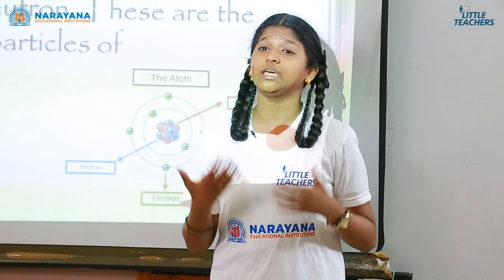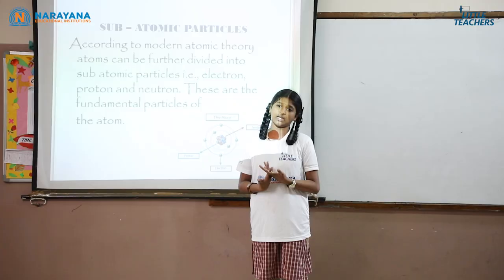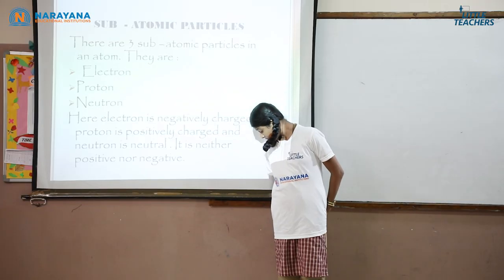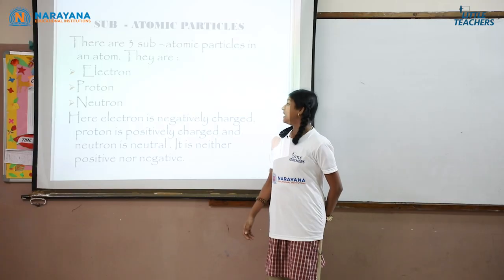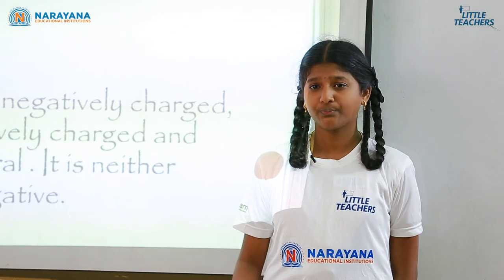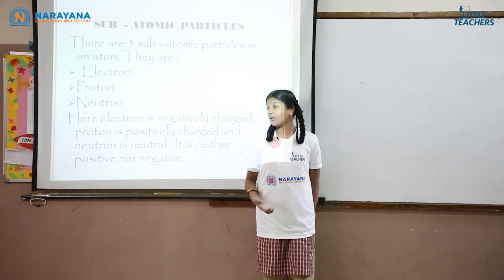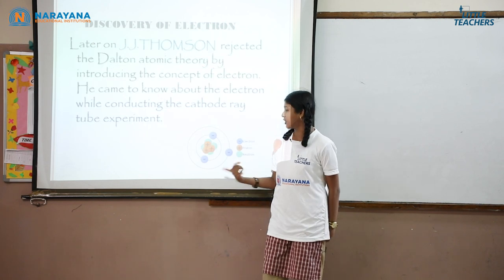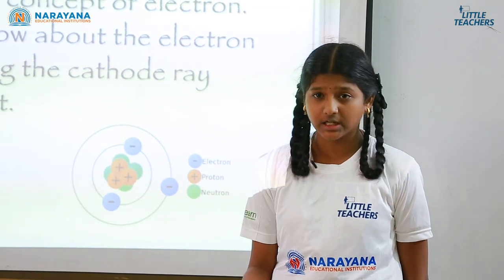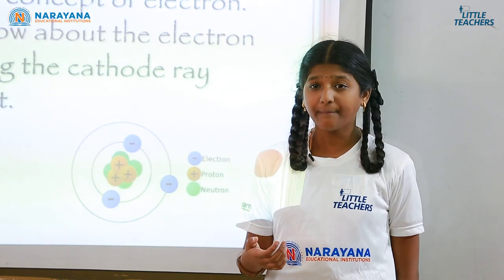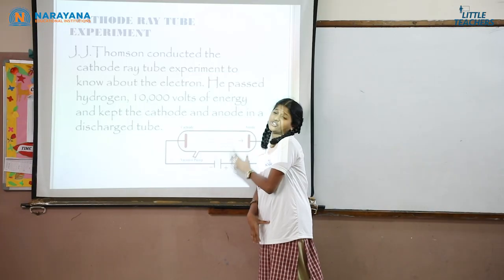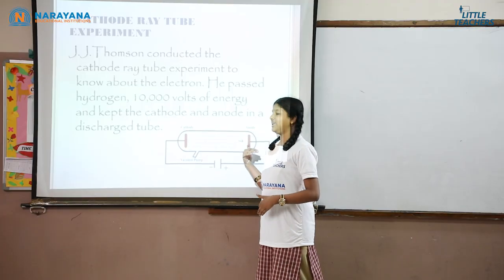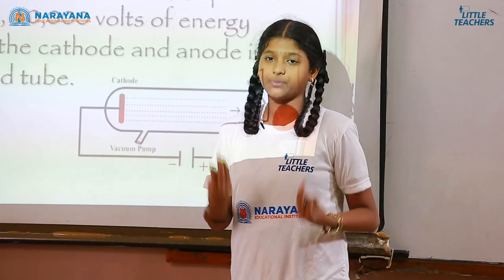Speaking of JJ Thompson, let's now see his experiment conducted to find out the cathode rays. Let's move on to the cathode ray tube experiment and start with the apparatus used. He used a discharge tube coated with fluorescent materials like phosphorus, a high voltage generator to pass electricity, a vacuum pump to pass hydrogen gas, and a cathode and anode.